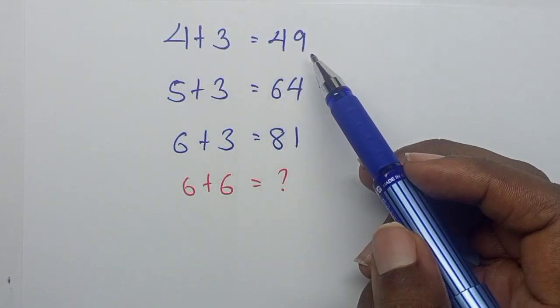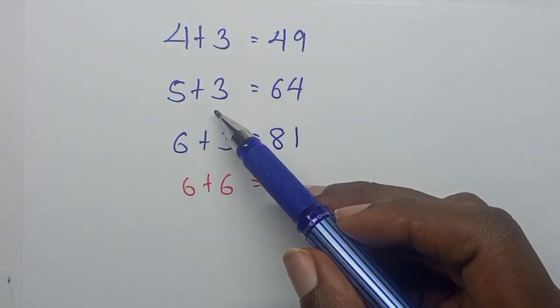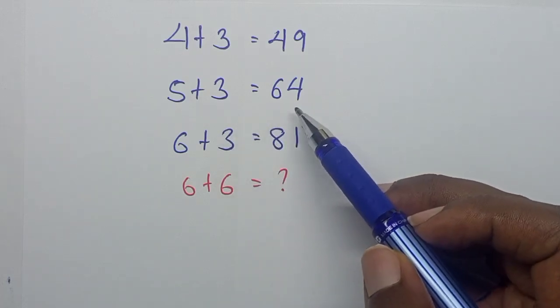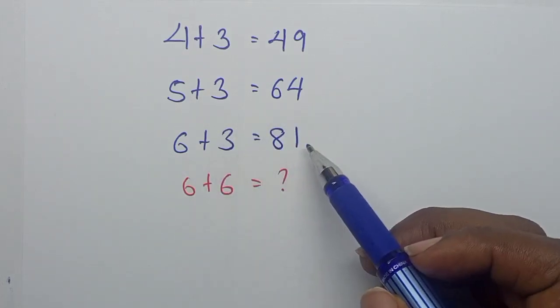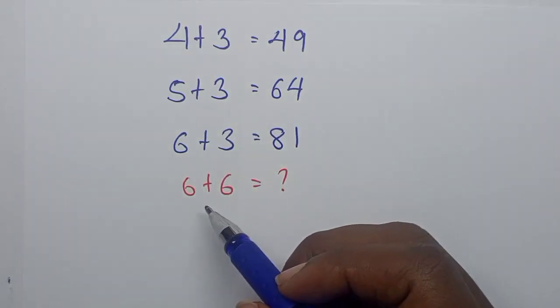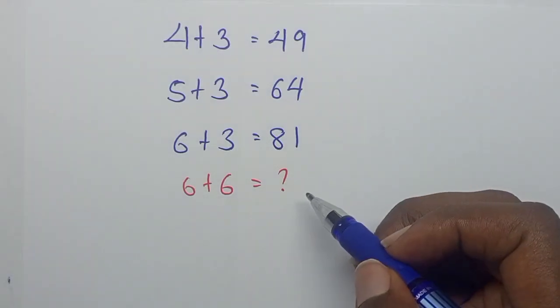4 plus 3 equals 49. 5 plus 3 equals 64. 6 plus 3 equals 81. So what is 6 plus 6 equal to in this sequence here?